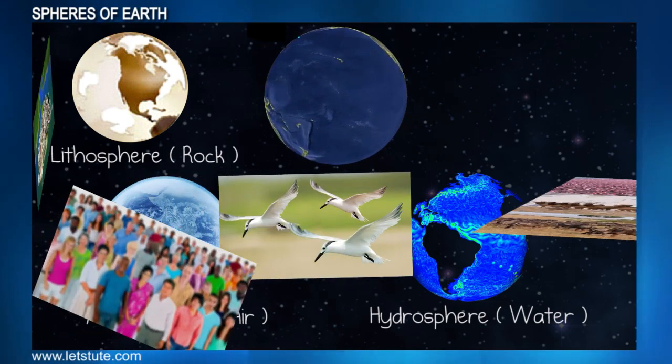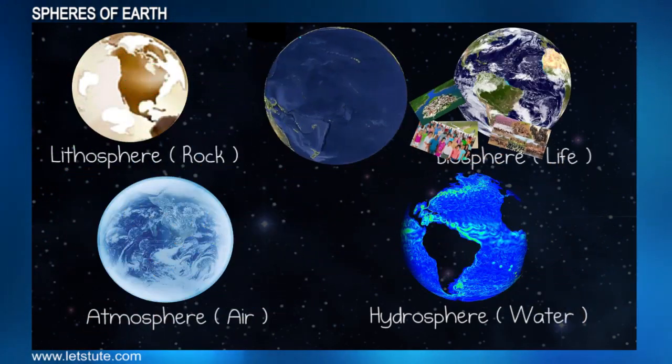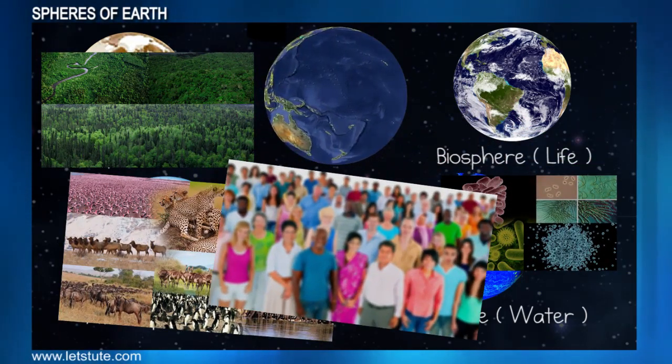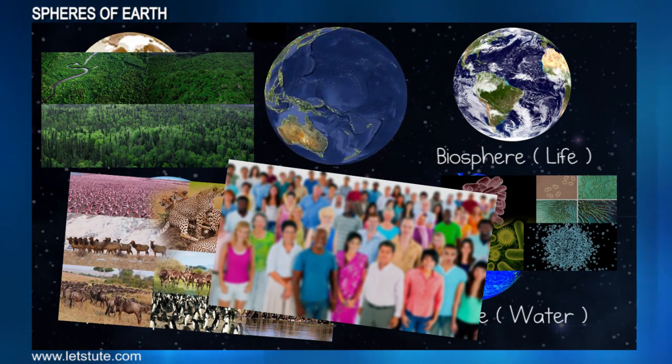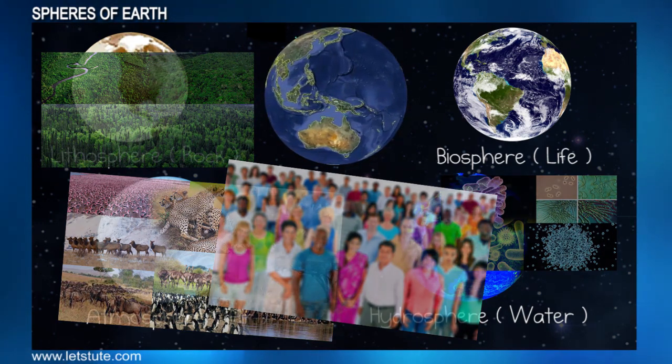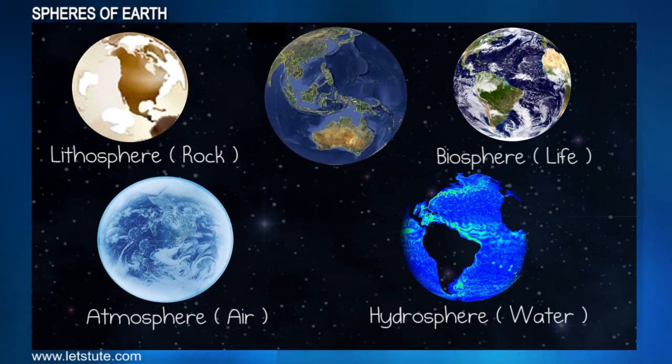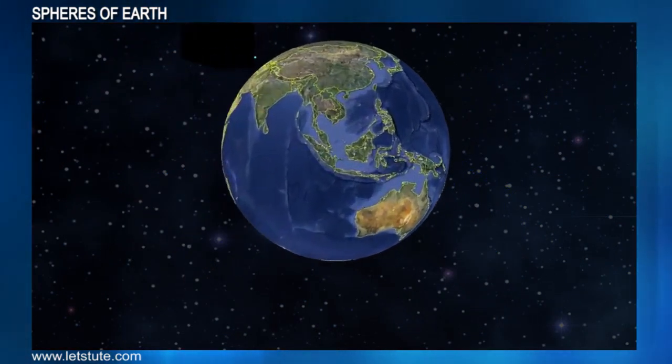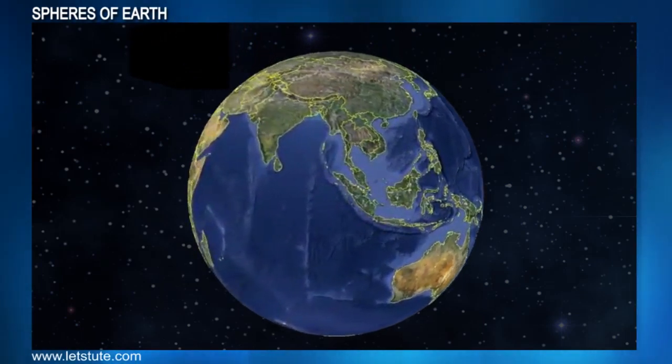And also the various life forms on the Earth—like plants, animals, microorganisms, and we humans—are part of another sphere called the biosphere. When these four spheres combine, it gives us the entire large sphere which is planet Earth.